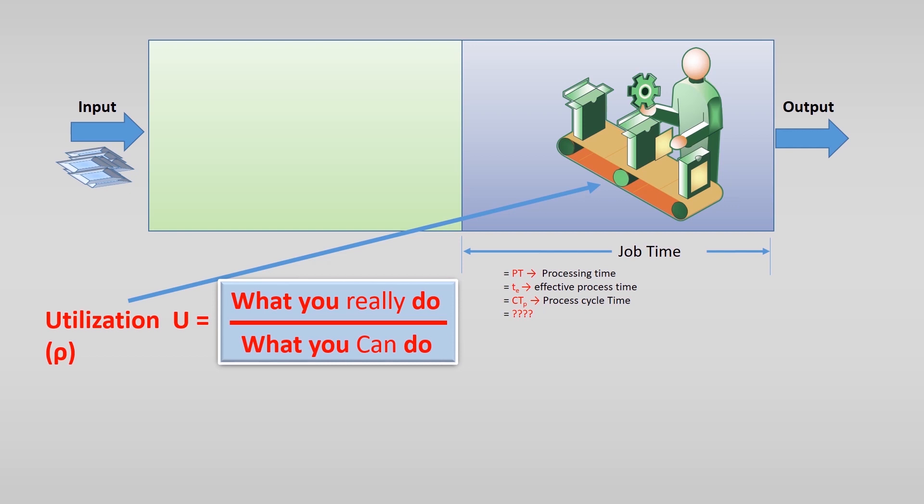But what you really have to do is not constant like in an ideal world. Although you can have an average input, the input varies in time. Sometimes you have some delays in supply or sometimes a large batch arrives. And if you think about the time it takes to do a job or the capacity of a process, this can vary too.